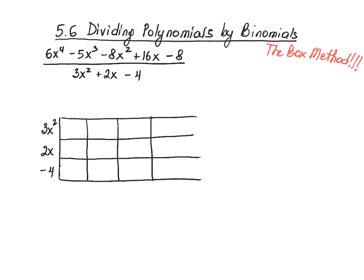We begin by placing the highest degree term inside of the box in the very first position. So 6x to the fourth goes into the first cell. 3x squared times how much will give me 6x to the fourth power? I need a factor of two and two more x's, or x squared, so that when 2x squared multiplies with 3x squared, it gives me 6x to the fourth.